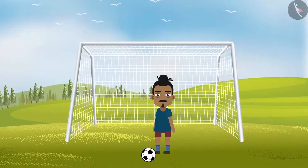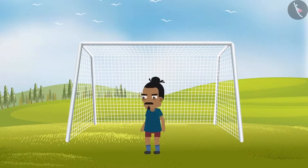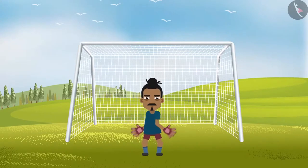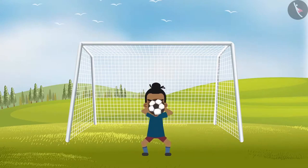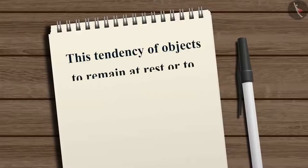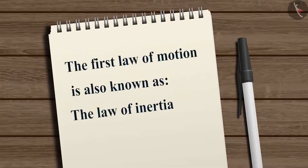A football on the ground does not move unless the footballer kicks it, and a football going towards the goal will not stop unless the goalkeeper stops it. This tendency of objects to remain at rest or to keep moving with the same velocity is called inertia. That is why the first law of motion is also known as the law of inertia.